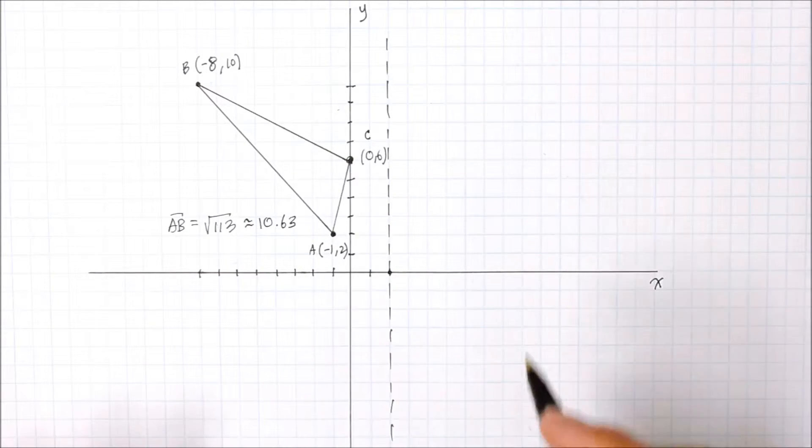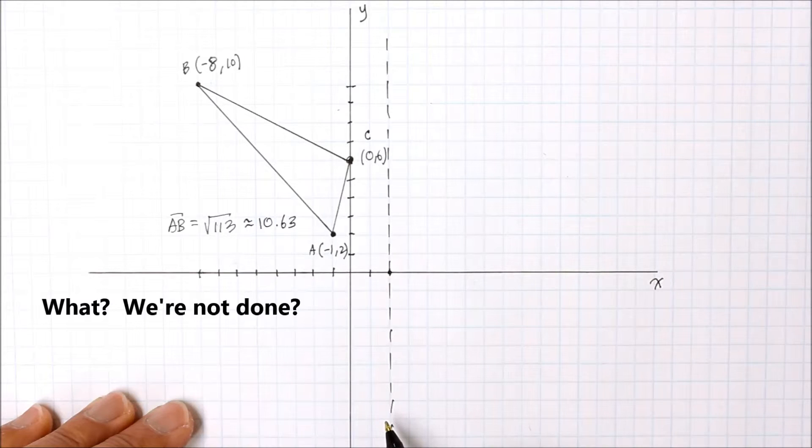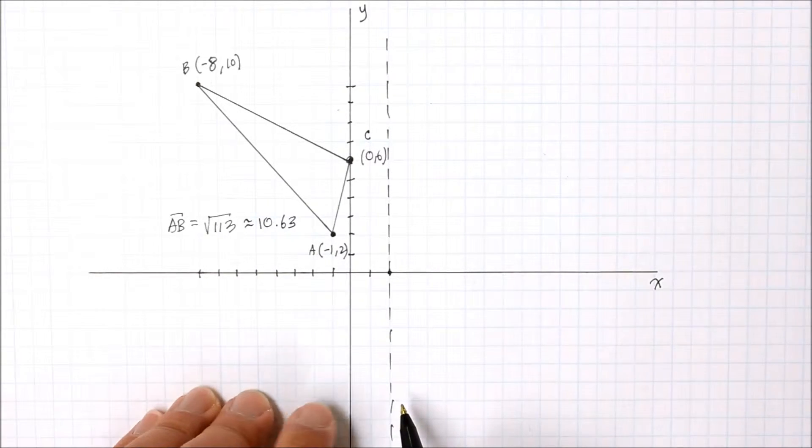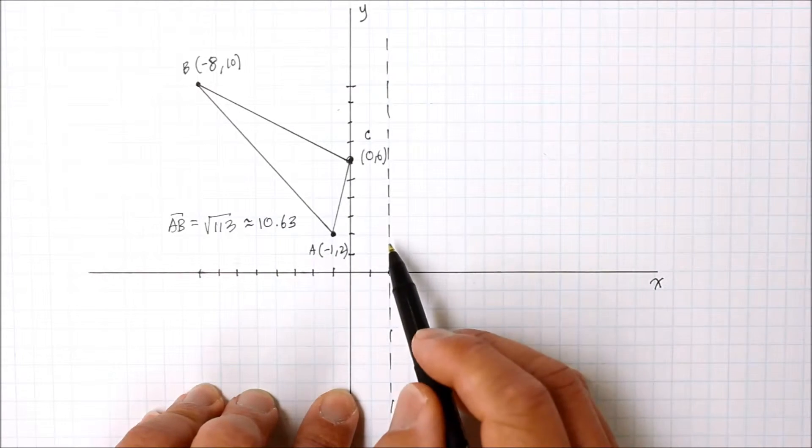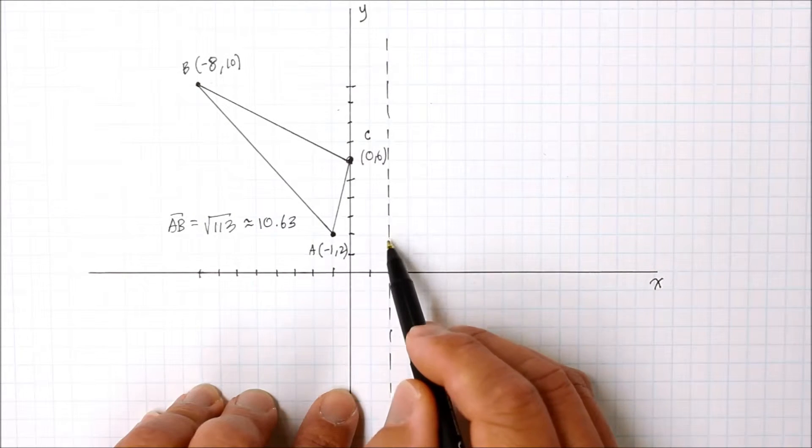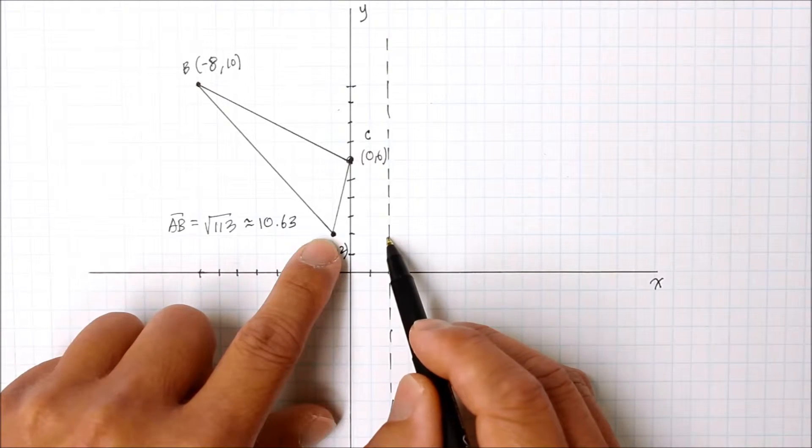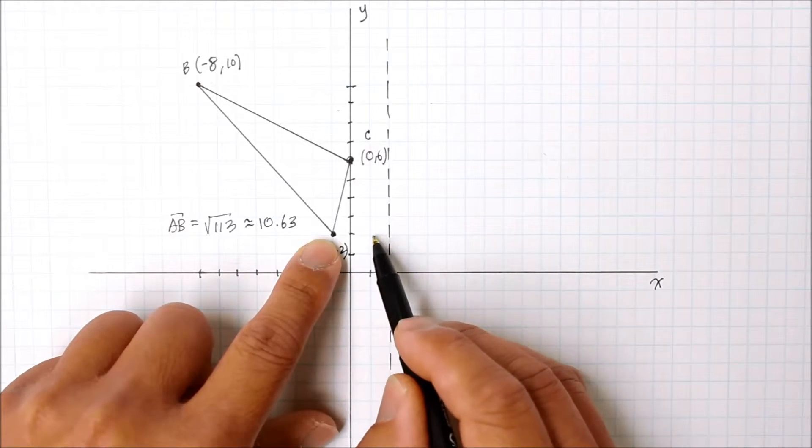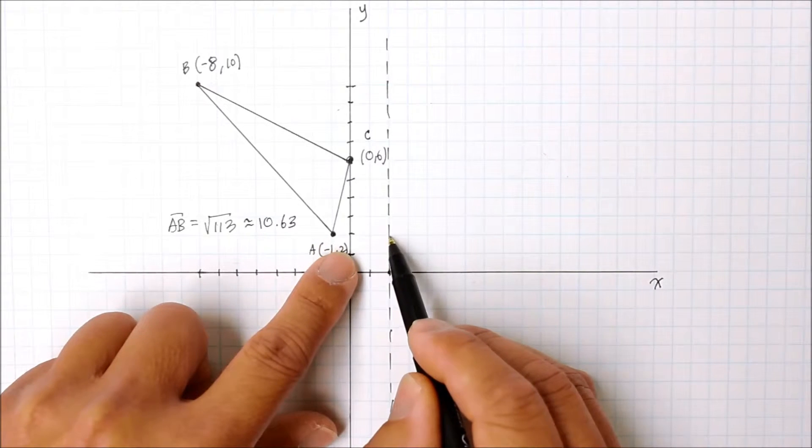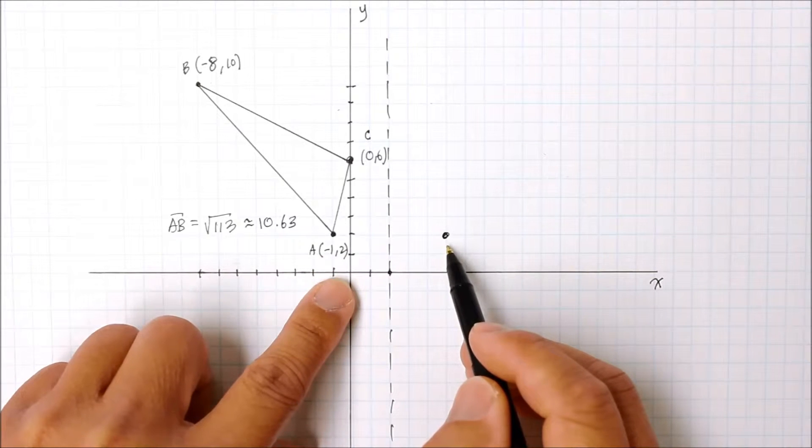Now we're going to reflect it over the line of reflection where x equals 2. Just like a line of symmetry of a quadratic function, we're going to count the number of units away from the line of reflection to that coordinate, the x value. From here, we got 1, 2, 3, so we're going to go 1, 2, 3 that away.